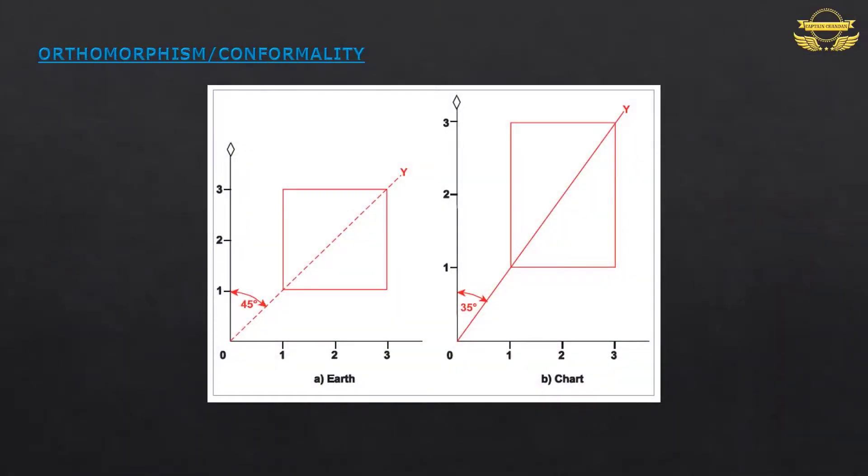In the diagram, direction of OY is 45 degrees on Earth but represented as 35 degrees on a chart. Scale along North to South also changes, but scale East to West remains same. But you can see the shape already changes on the chart, so this is not a conformal chart.